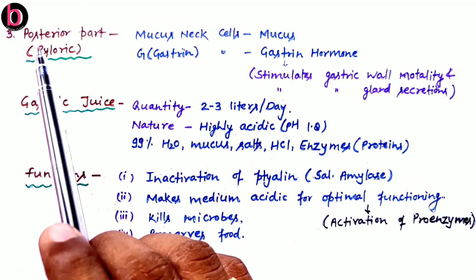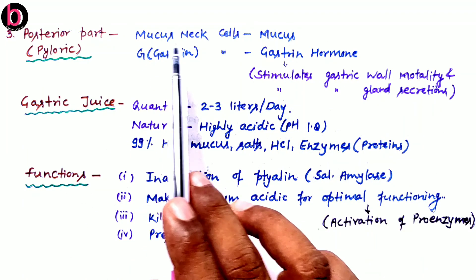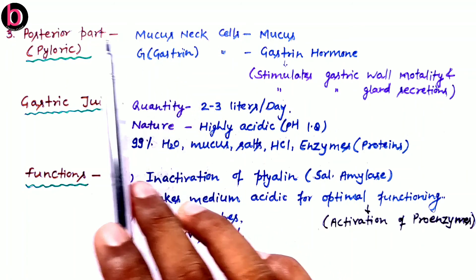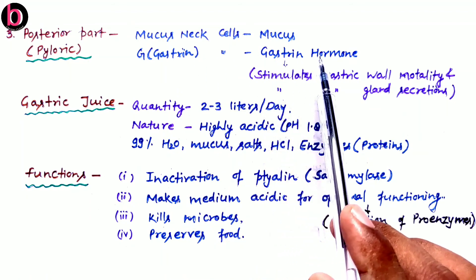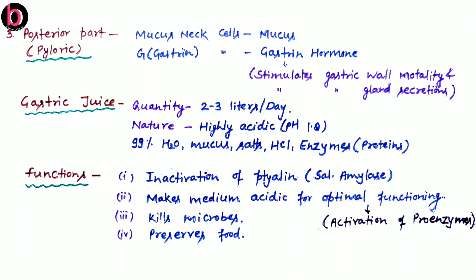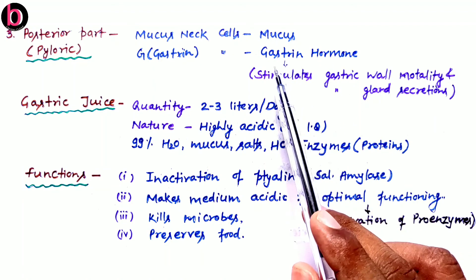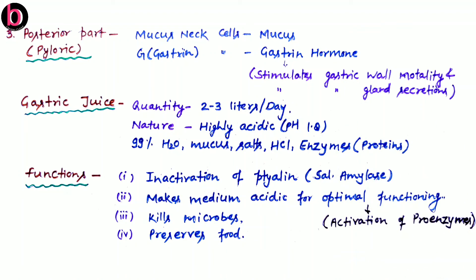The last part is the posterior part of the stomach, known as the pyloric part. This pyloric part carries mucus neck cells for secretion of mucus, and also G cells, or gastrin cells. G cells secrete gastrin hormone, which is a localized hormone — functional at the same site of secretion but circulated via blood. Gastrin hormone stimulates the gastric walls, causes muscular motility of the stomach, and also stimulates the rest of the gastric glands for their respective gastric juice secretion.